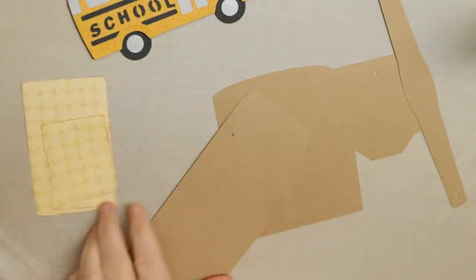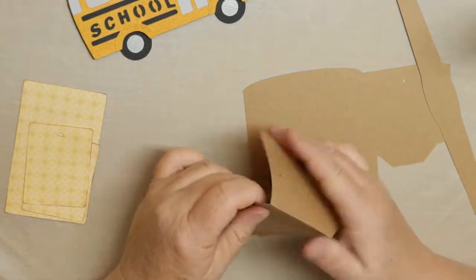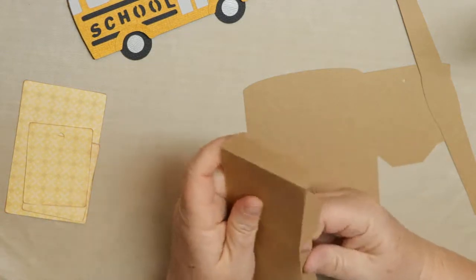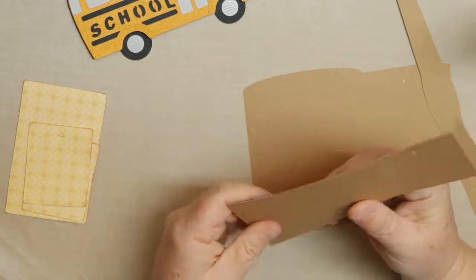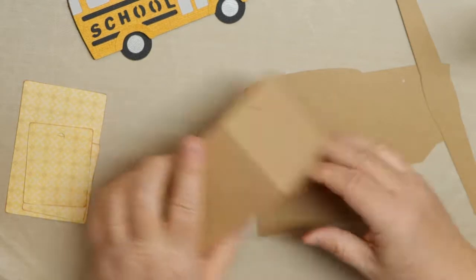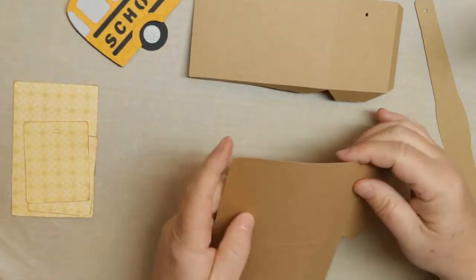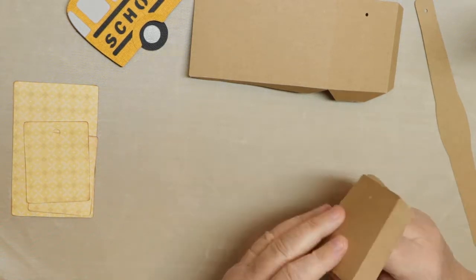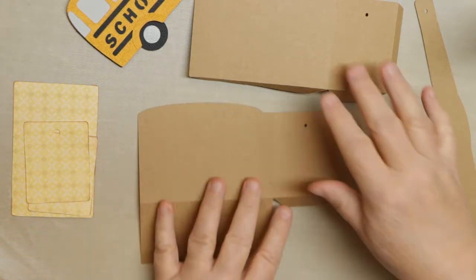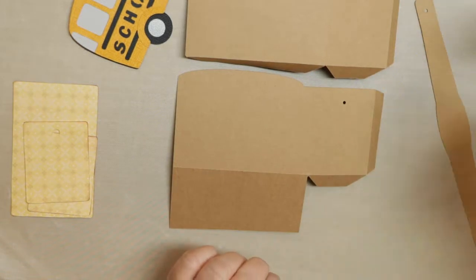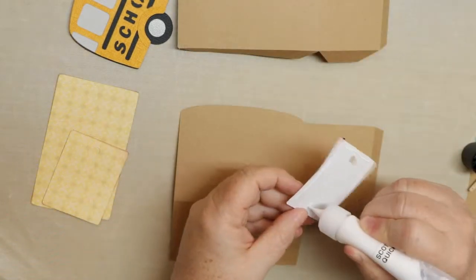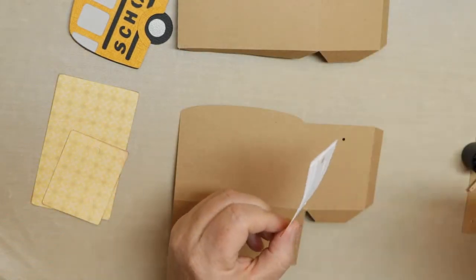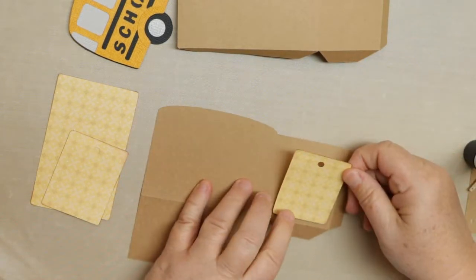So once we cut out the pieces for the bag we just want to go ahead and quickly fold them on the score lines. And I like to do this in advance so it's easier for me to place the panels because I want to put on the panels when it's flat. So we're going to place the two sides and back panel on first and the bus will go on afterwards.